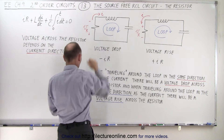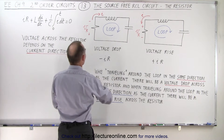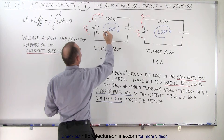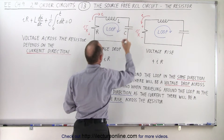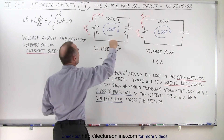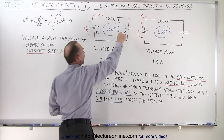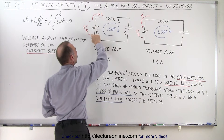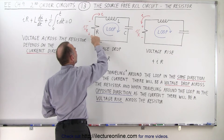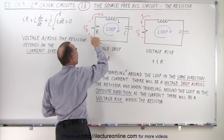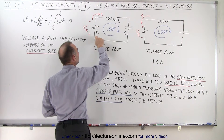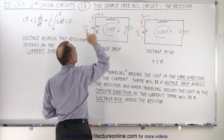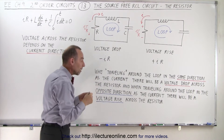When we go across the resistor — there's the resistor, the inductor, the capacitor — when we go in the same direction as the current direction, there will be a voltage drop across the resistor. When we go from this end to this end of the resistor, that will be the voltage drop.